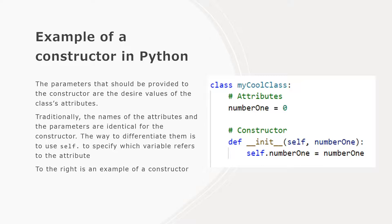So self.number1 refers to the number1 attribute, and the equals number1 refers to the parameter number1. What's happening is that we're grabbing the number1 parameter and putting its value into the number1 attribute. If you want more parameters you can add them, or if you want less you can remove them, but you must always have at least self in the constructor's parameter list, and it must always be the first parameter.